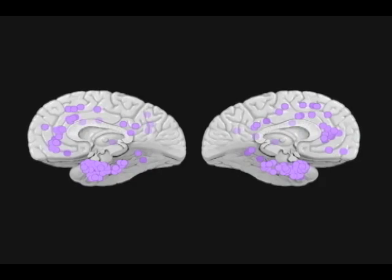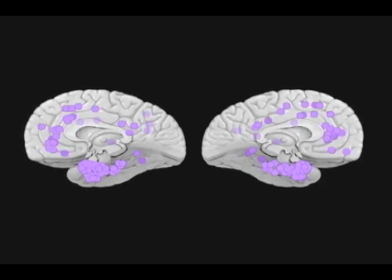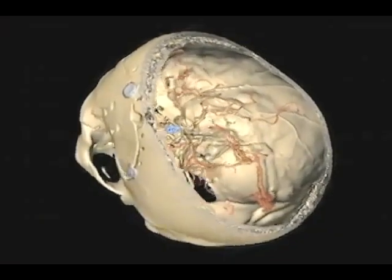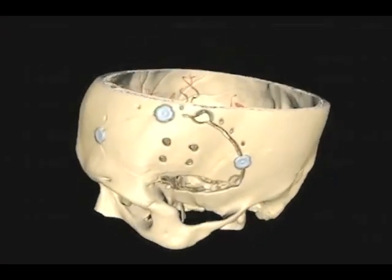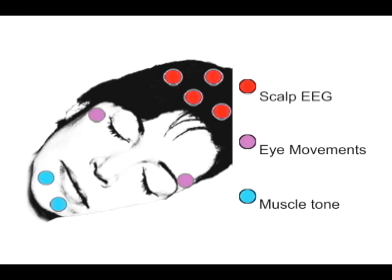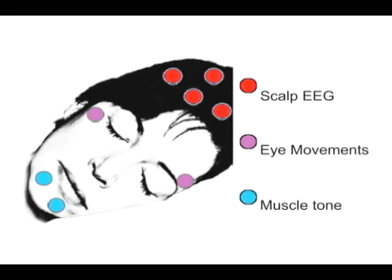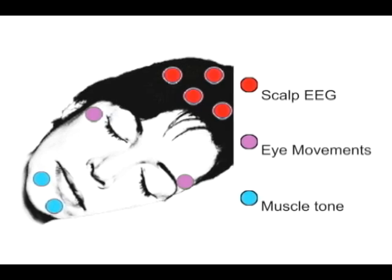Importantly, eight to twelve brain regions were monitored simultaneously in each patient, allowing us to examine the relation between sleep oscillations in different regions. Patients were continuously monitored during a full night sleep study. Scalp EEG, eye movements, and muscle tone measurements were used to determine the state of sleep.